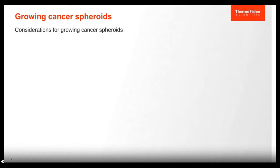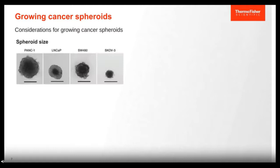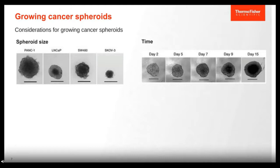When growing cancer spheroids, certain aspects need to be considered. First, spheroid size: spheroids can differ in compactness depending on the cell line being used. This image shows four different cancer cell lines seeded at 5,000 cells per well — each of various sizes. To obtain spheroids of a specific diameter for downstream assays, the cell seeding density needs to be optimized. Another factor is how long you have them in culture. Cells grown in 2D grow faster than in 3D. Some spheroids will be ready within 24 hours, while some will require up to 9 days. The ideal spheroid is translucent, has a fine boundary, and a minimal dark core.